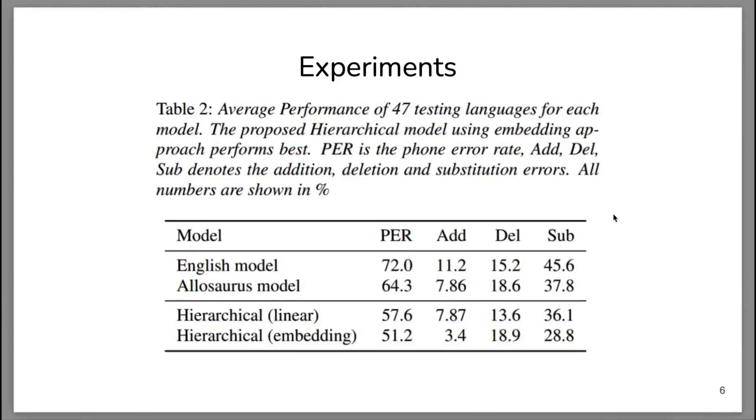For our experimental results, we compared our model with two baseline models using 47 testing languages. We compared them using PER, the phone error rate. As you can see, we achieved a 51% phone error rate, which is much better than the other two baseline models.